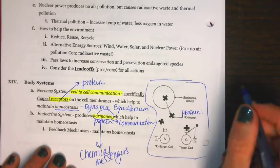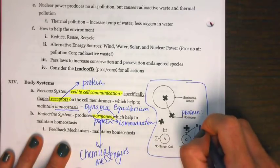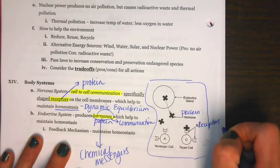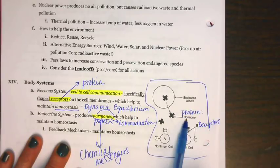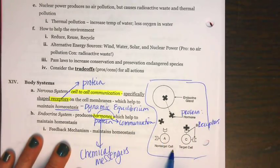Now what you'll notice is that we have non-target cells and then we have target cells. The target cells have these receptors on them, and the receptors are the correct shape, meaning that the hormone matches up like a puzzle piece or like a lock and key with the receptors. This protein hormone can then talk to the target cell, whereas the non-target cell will not be able to pick up the message.